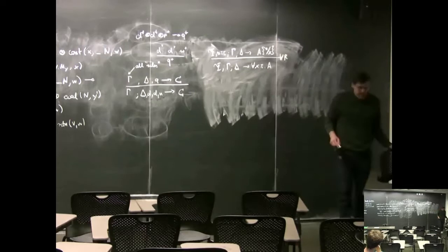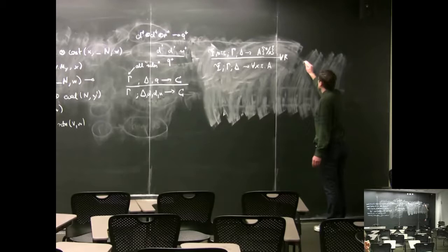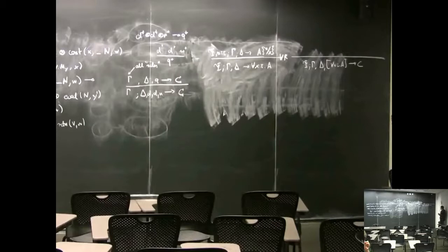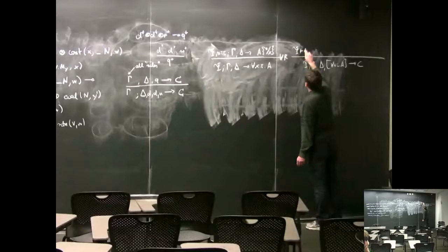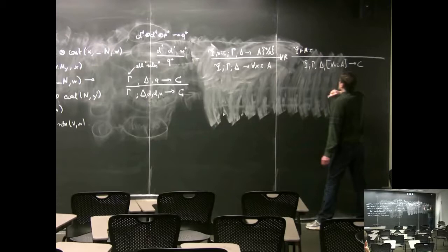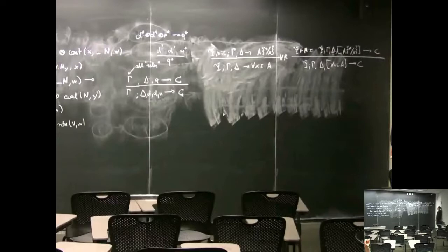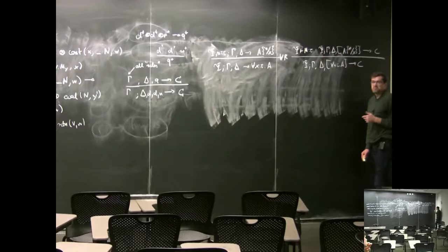If the for-all right rule is invertible, we'd expect the left rule not to be invertible — you can apply it only when it's in focus. We have psi, gamma, delta, and in focus for all x colon tau dot A, trying to prove C. We choose some term M which has type tau in psi, and then psi doesn't change, gamma doesn't change, delta stays the same, and we're focused on A where we substitute M for x, and C doesn't change. So we can instantiate the quantifier as long as we have a term of the right type, and we remain in focus.